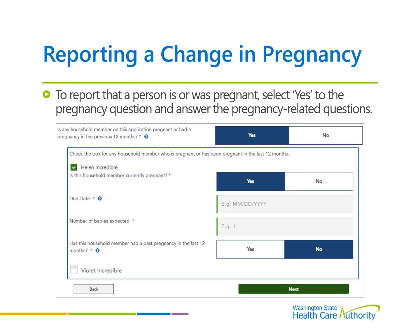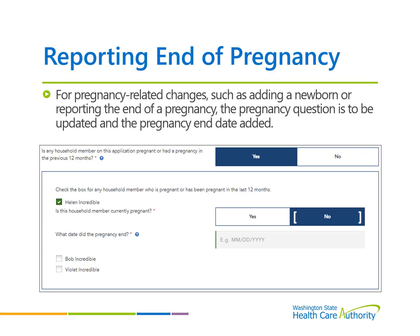Common instances of changes reported are reporting a pregnancy and adding a new household member. To report that a household member is pregnant or has been pregnant in the last 12 months, select Yes to the Pregnancy Question under the Answering Questions About Your Household section of the application. Indicate who is or was pregnant, their due date, and expected number of babies. In instances where you are adding a newborn or otherwise reporting the end of a pregnancy, make sure to update the pregnancy question and provide the end date. This change is important to assure 12 months of continuous after-pregnancy coverage, known as APC.